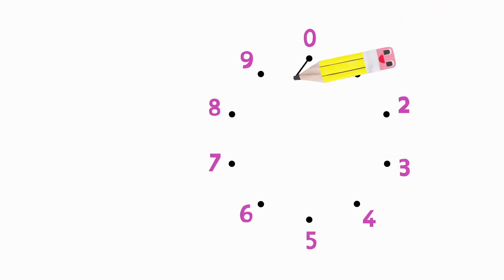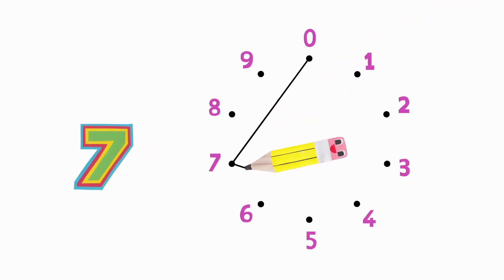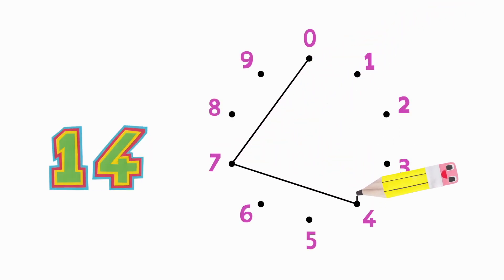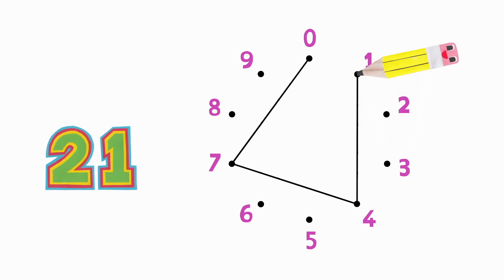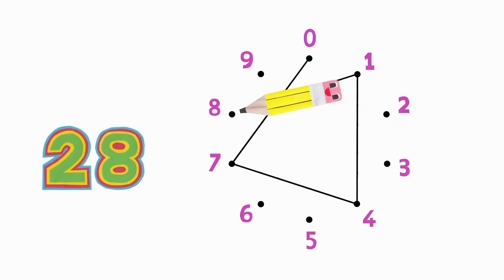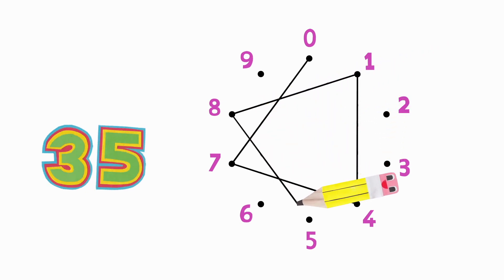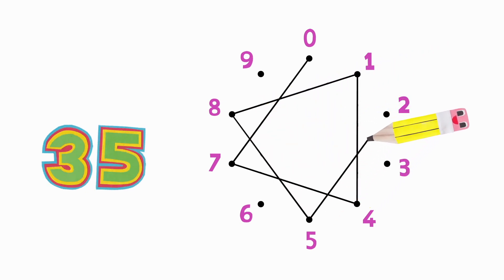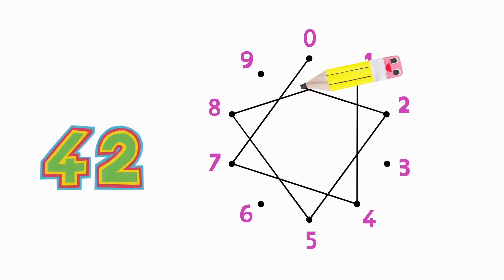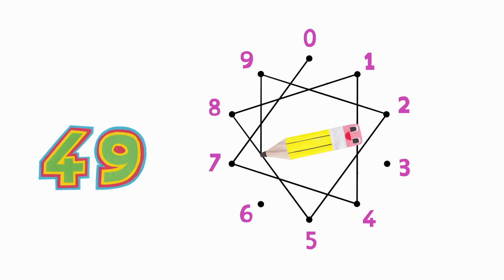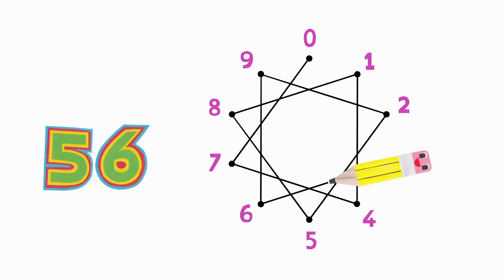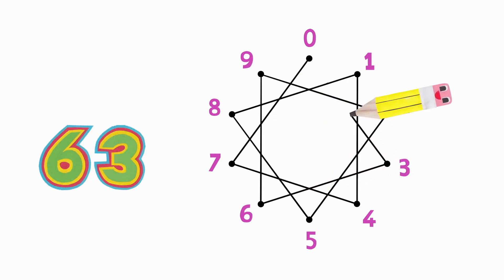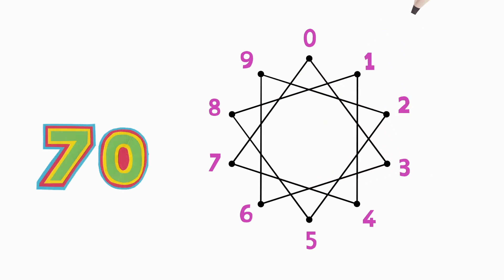Seven times table. Seven, fourteen, twenty-one, twenty-eight, thirty-five, forty-two, forty-nine, fifty-six, sixty-three, seventy.